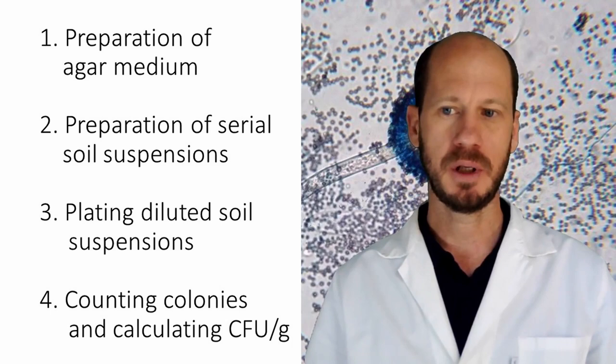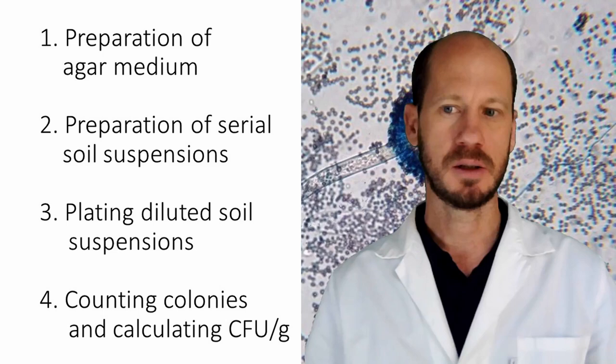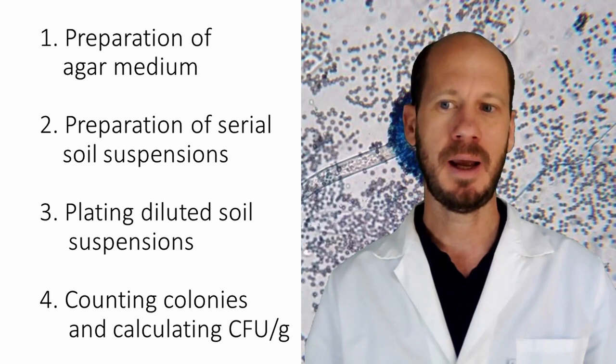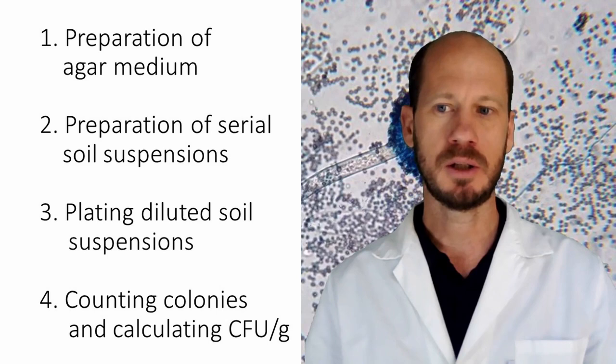We are going to divide this lab in four steps. The first step is the preparation of the agar medium and the second step will be the preparation of the serial dilutions from soils. Then we're going to transfer the soil suspensions from the serial dilutions into the agar plates and incubate those agar plates for a few days for the microbes to grow. Then we will count those colonies and use those microbial counts and the amount of soil that we have weighed to calculate the number of colony forming units per gram of soil.